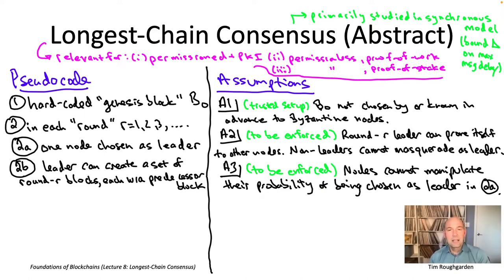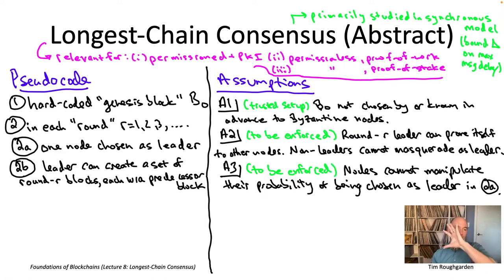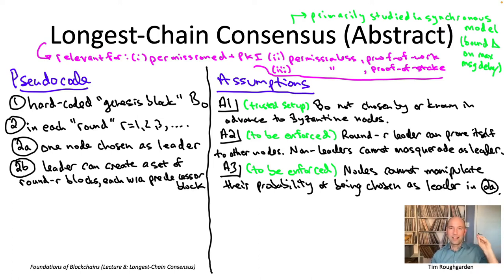Each block must have a predecessor referring to some other existing block; if a block specifies no predecessor or a non-existent one, honest nodes will ignore it. At minimum, the predecessor could be the genesis block.